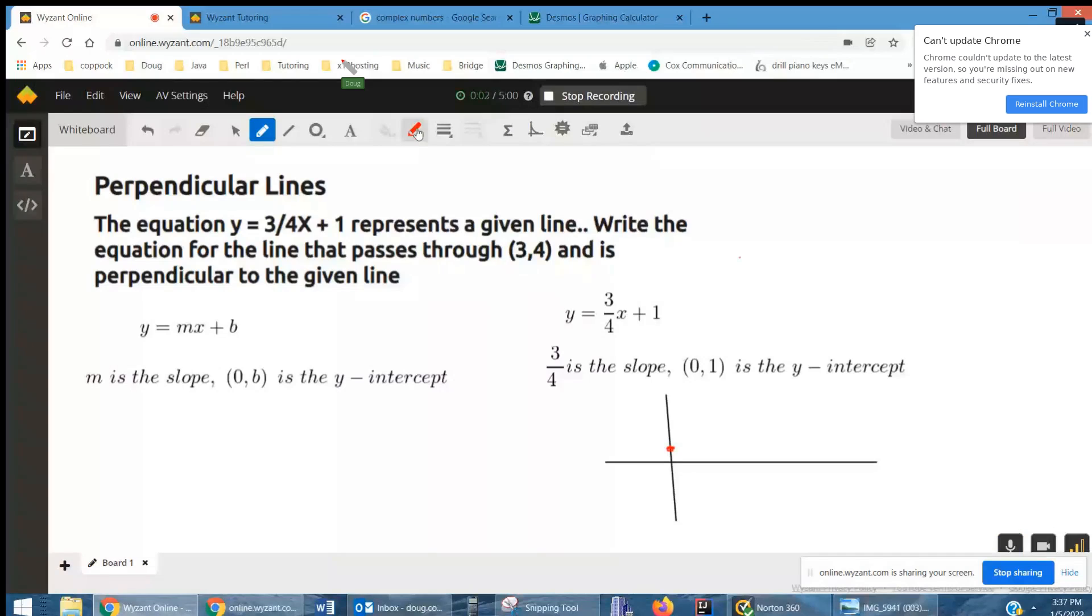Okay, so we'll kind of go back to basics here and get you through this. This is the equation that we're given, and that equation is written in slope-intercept form, which is y equals mx plus b.